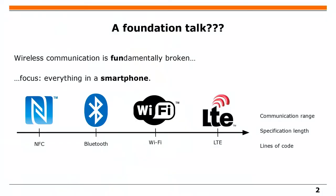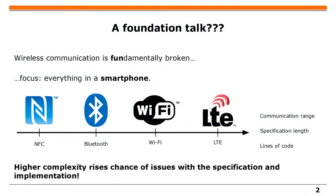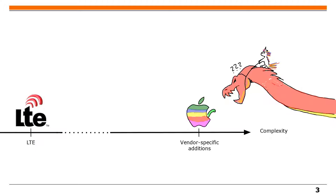This talk was originally going to be a foundational talk, but I decided I want to look at everything — basically everything typically found in a smartphone: NFC, Bluetooth, WiFi, LTE. You can sort these by, for example, number of lines of code for the implementation. More lines of code means more specifications, which brings more complexity. The worst is LTE in this regard, and even worse are vendor-specific additions to standards.